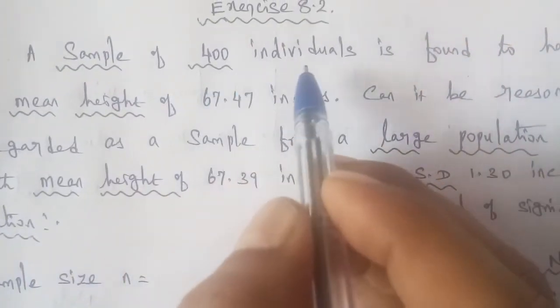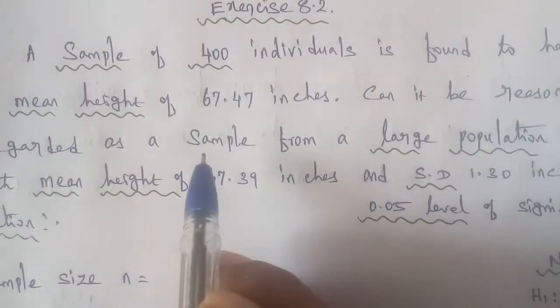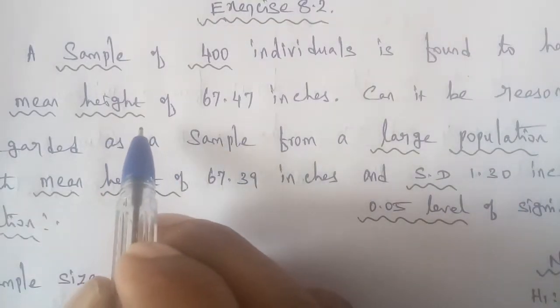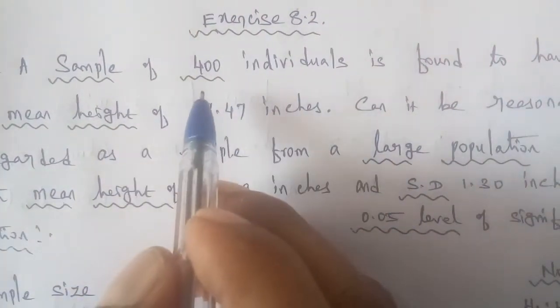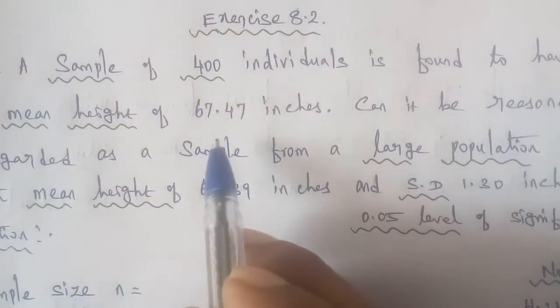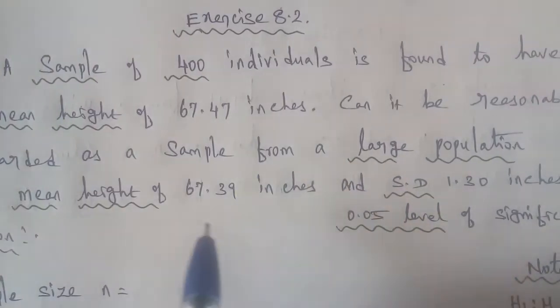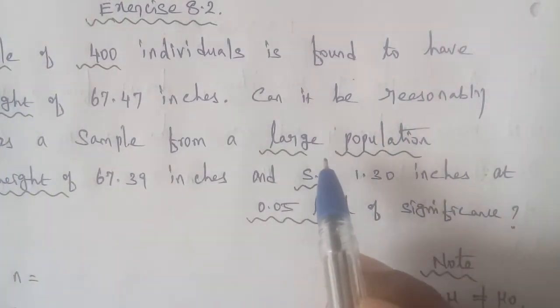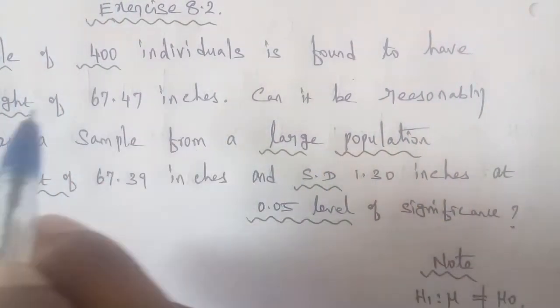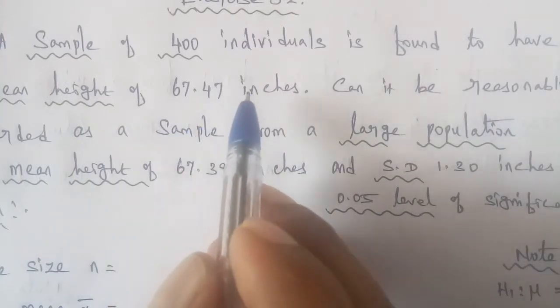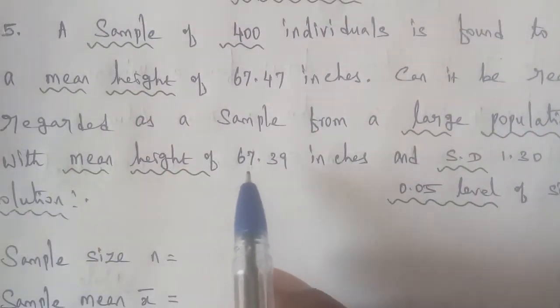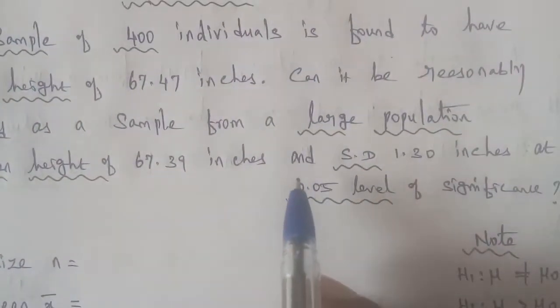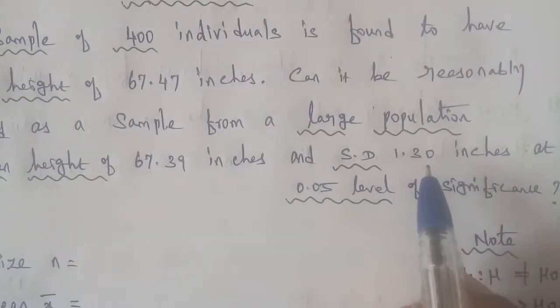400 individuals - the sample of 400 individuals, mean height 67.47 inches. So 400, and the mean height is 67.47 inches, and the large population is 67.39 inches, and the standard deviation is 1.30 inches.